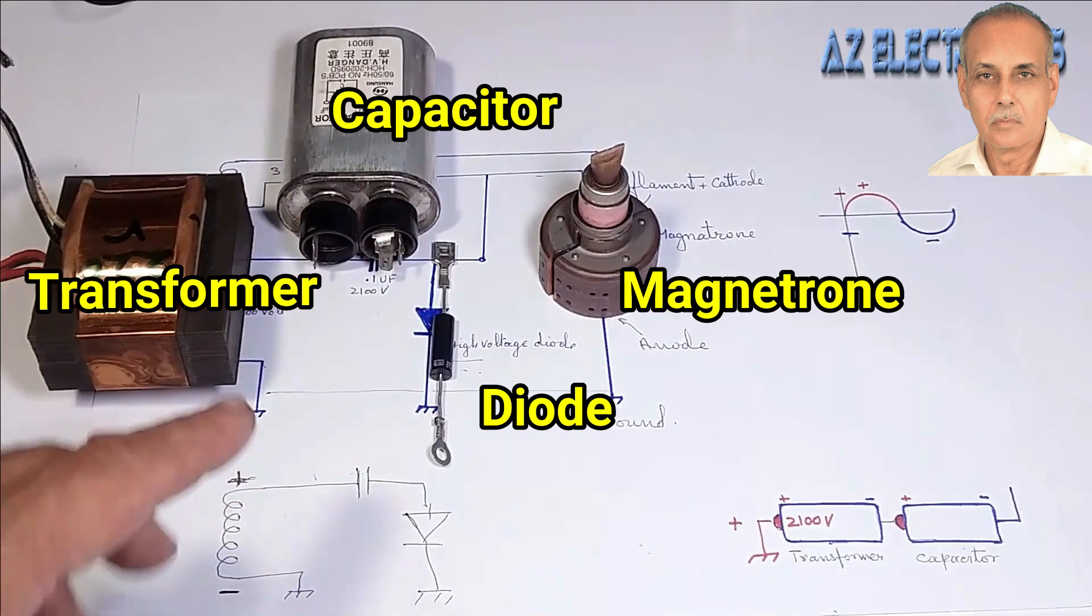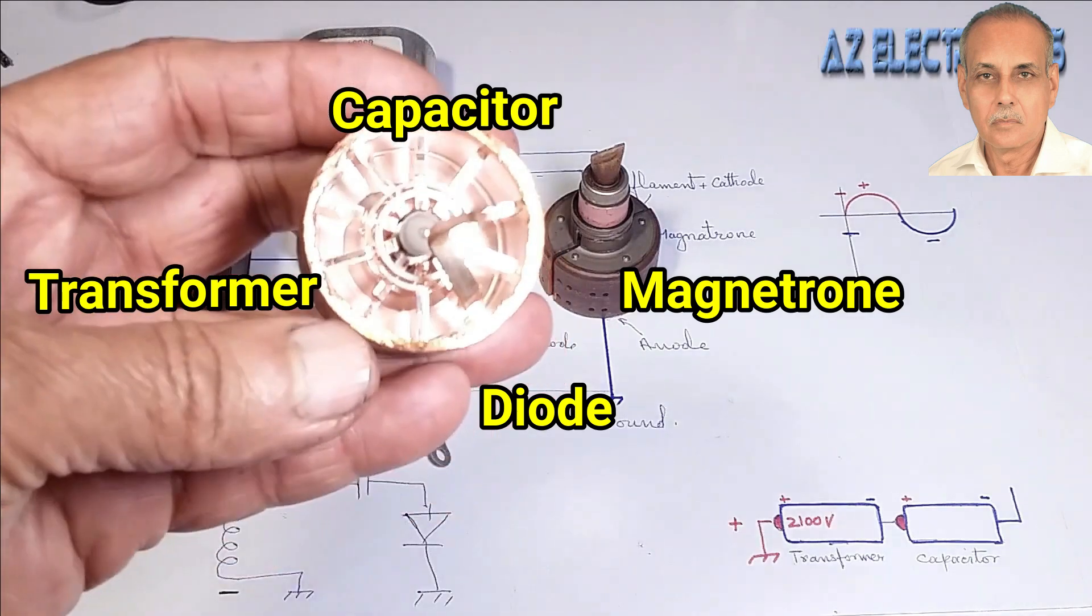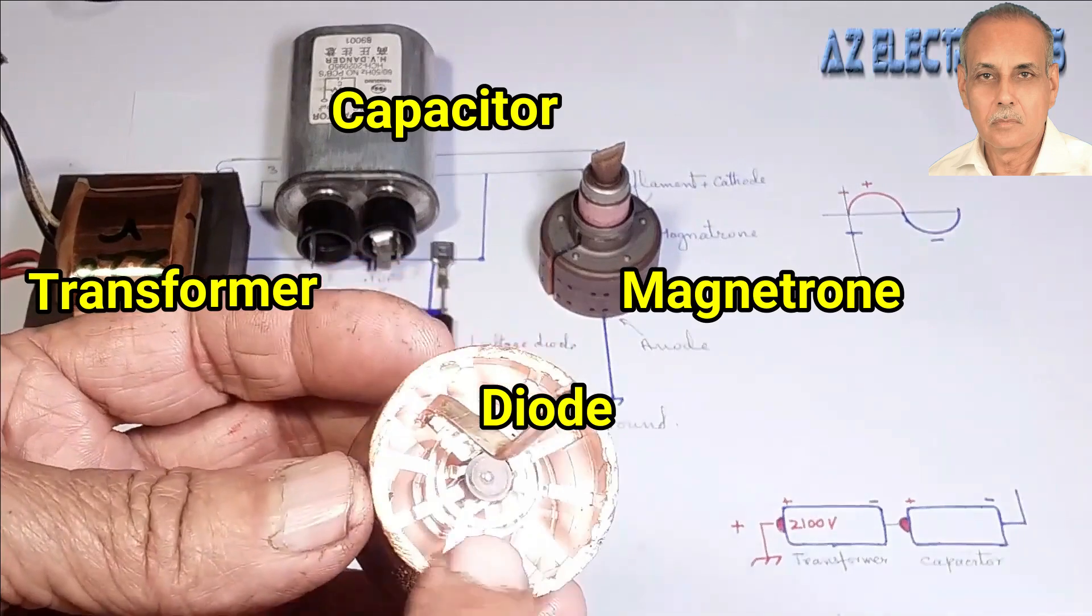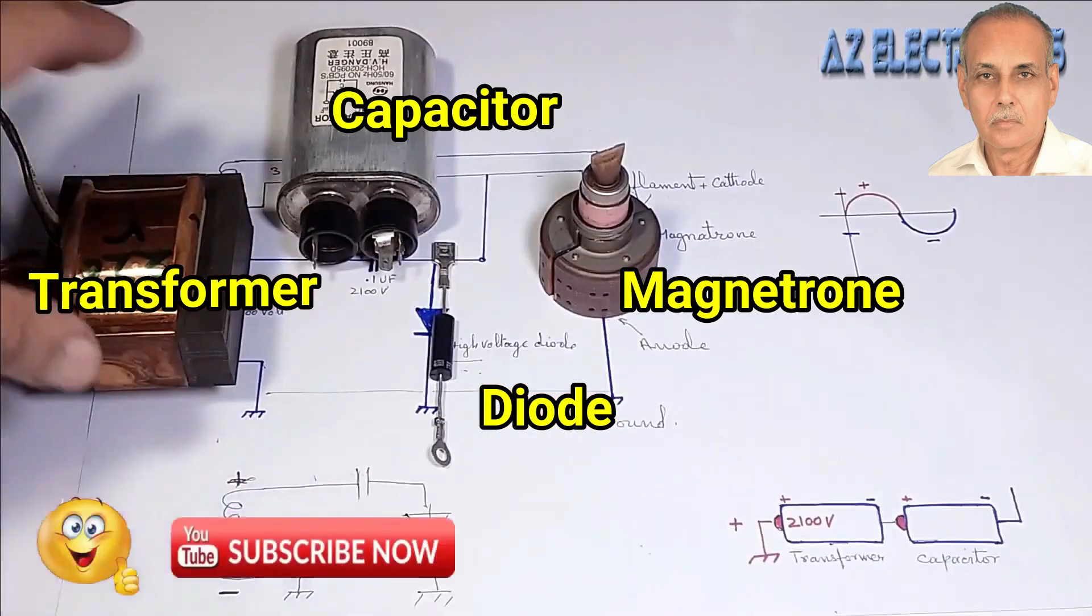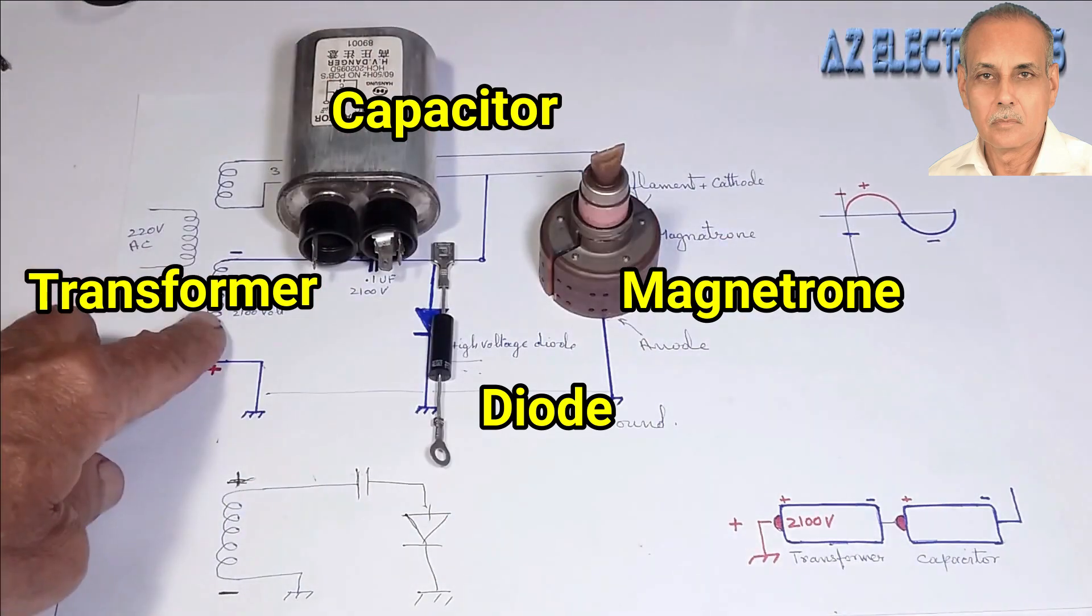And microwaves are responsible for heating the food inside the oven. The rest are timers and other electronic circuitry. Some are for safety purposes and some are to control the heat of the food. But a basic microwave oven works with only these four components. Today we will see how all these things work.